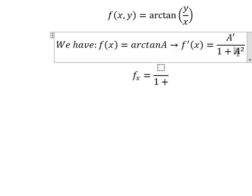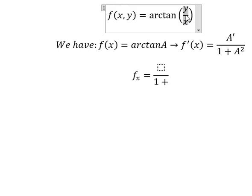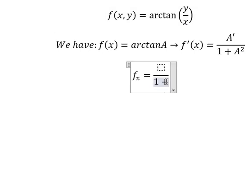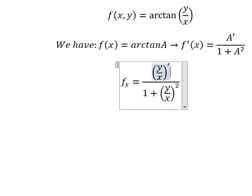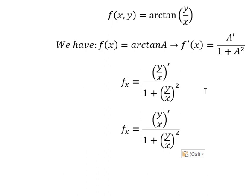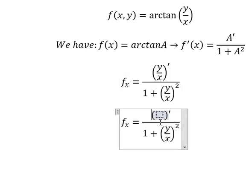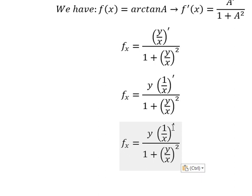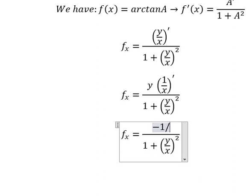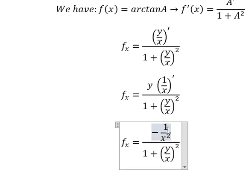So capital A we change for y over x, and then we do the first derivative of capital A. We know that this is bound with respect to x, that means we just do the first derivative 1 over x, and this one we have negative 1 over x squared with y in here.